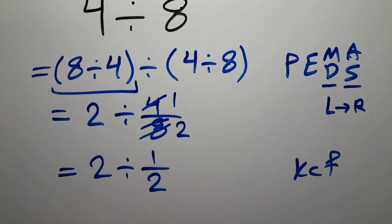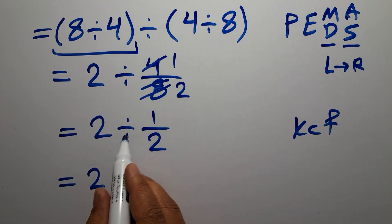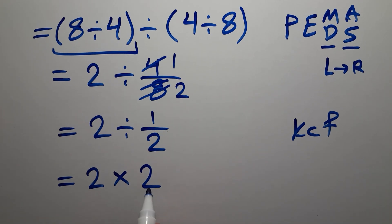Keep the first fraction. We can write 2. Change division to multiplication and flip the second fraction. So we have just 2 times 2, which equals 4.